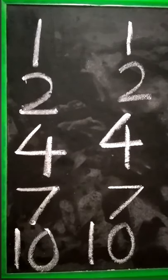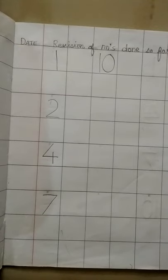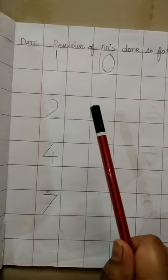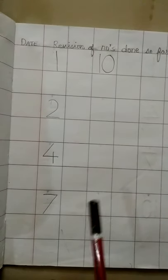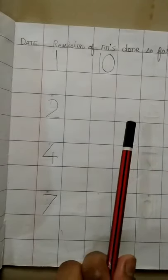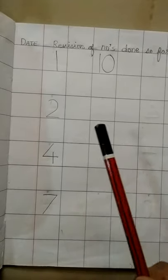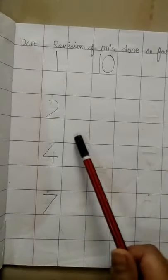So children, what you have to do is, you have to write these numbers in the notebook. Children, this is how we are supposed to write. Okay? So I have used pencil. And a reminder for you, you all will be using crayon to complete your work.